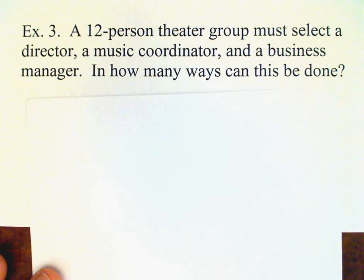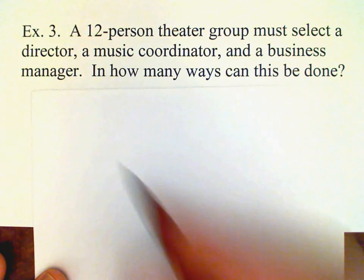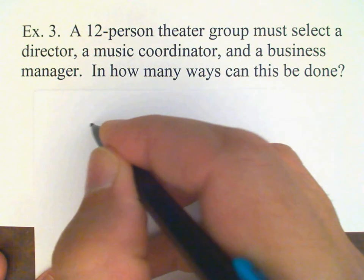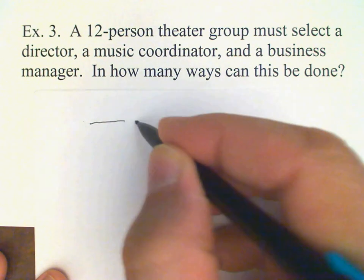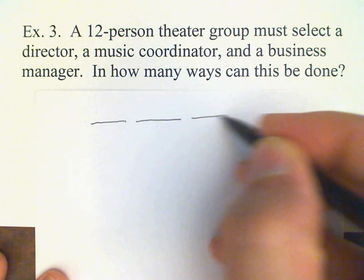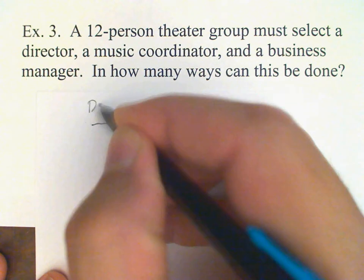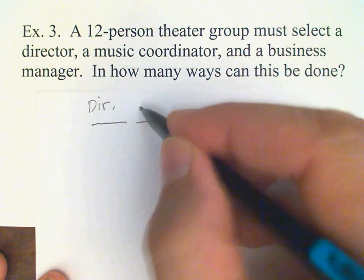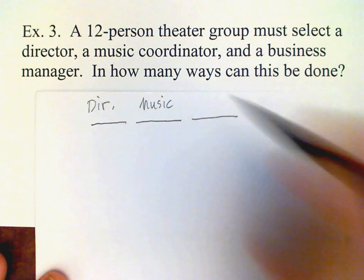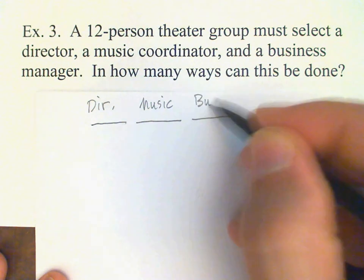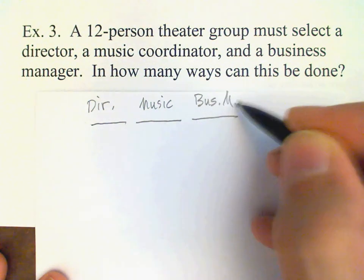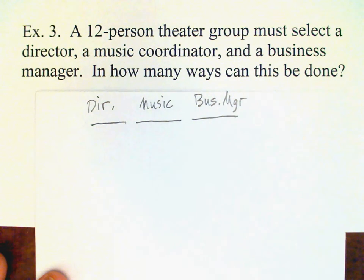Essentially what we have here is a slot-filling problem. We have three slots and the slots are labeled director, music coordinator, and business manager. We just need to determine the number of ways to fill those slots.